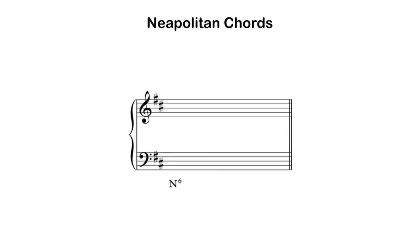Let's figure out how to spell a Neapolitan chord. What you have before you is a grand staff with a key signature of two sharps. Since Neapolitans most commonly show up in the minor mode, we're going to assume the two sharps represent B minor. A Neapolitan is a major triad built on the lowered second scale degree. In B minor, the normal second scale degree is C sharp. We want to lower that by a half step, so our root is going to be C natural, and then we spell a major triad up from C natural.